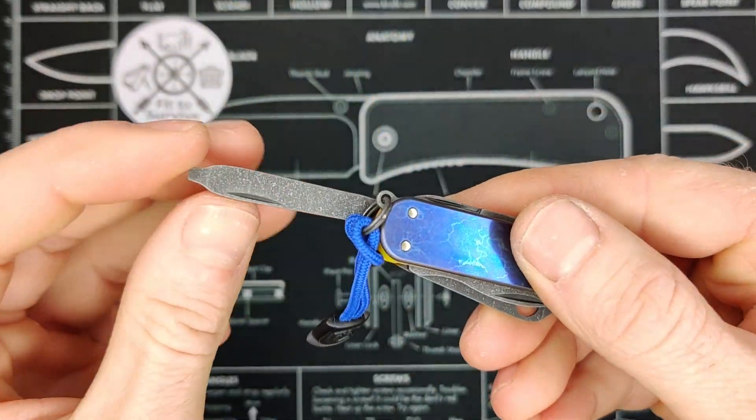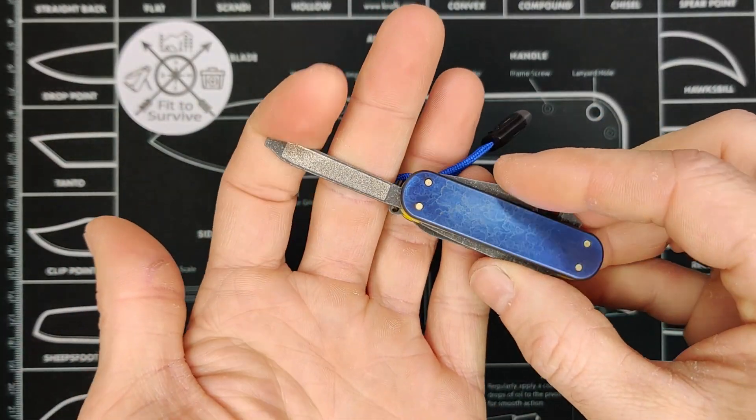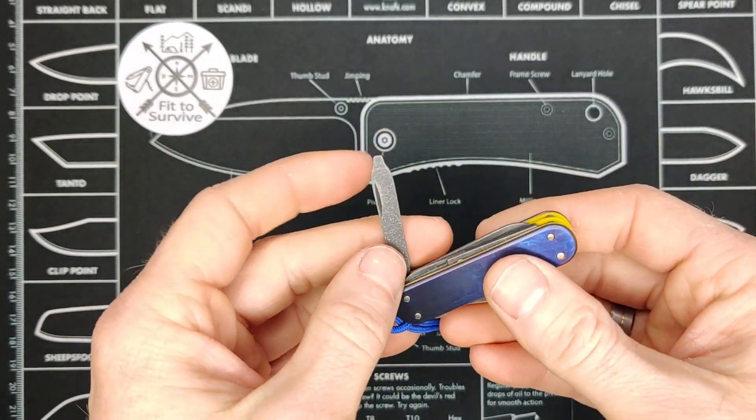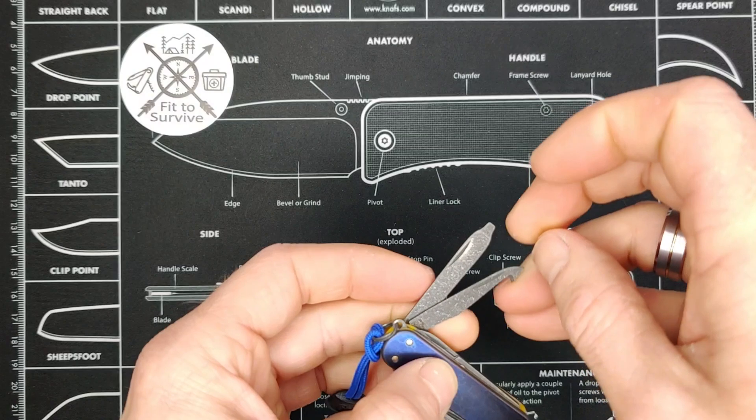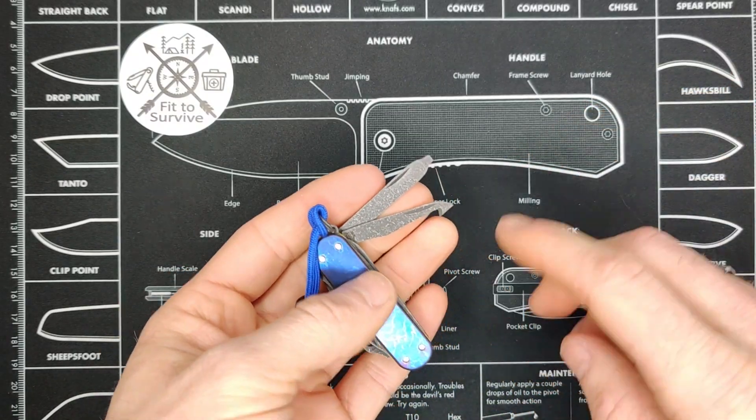We have the file with the flathead on the end. And something else about this particular setup is that both these tools, the cut and pick tool and the file, they both have the nail knicks pointing the same direction.